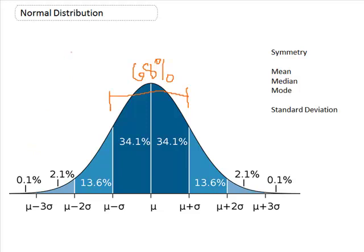Moving out one standard deviation further, so now we're going two standard deviations above and below the mean — not only are we containing the dark blue area, but also the light blue areas on the sides. So going two standard deviations above and two standard deviations below the mean, all of that area is approximately 95%. That means 95% of our scores fall within two standard deviations of the mean.